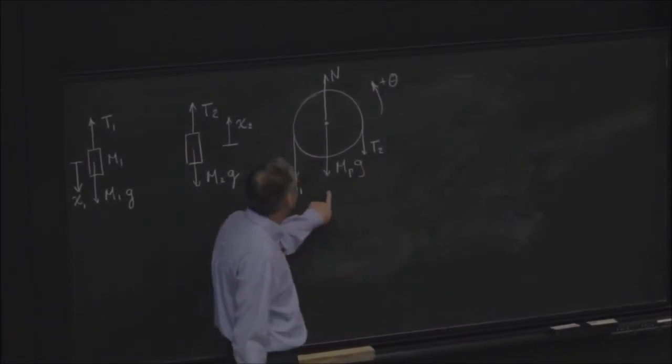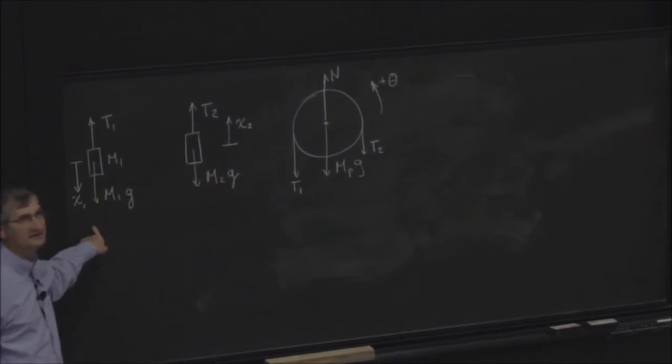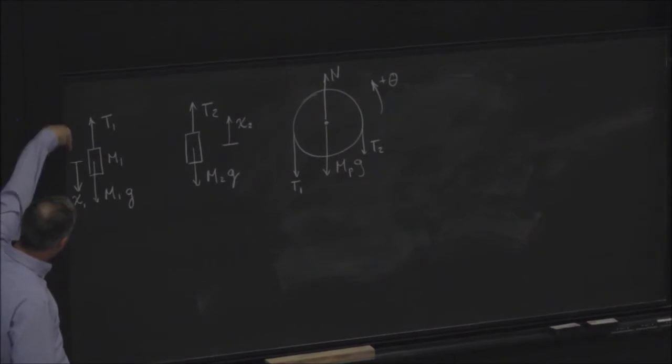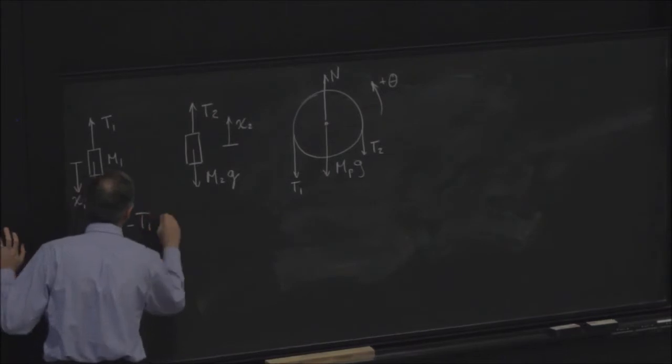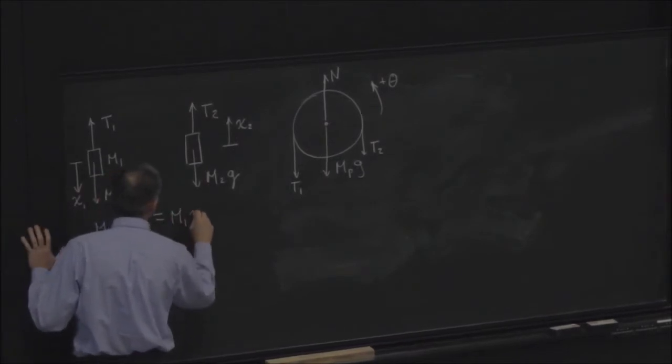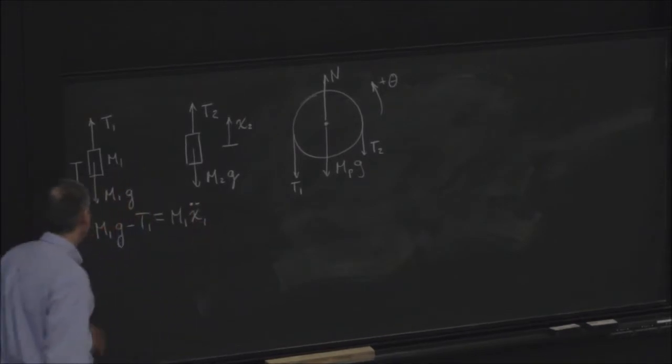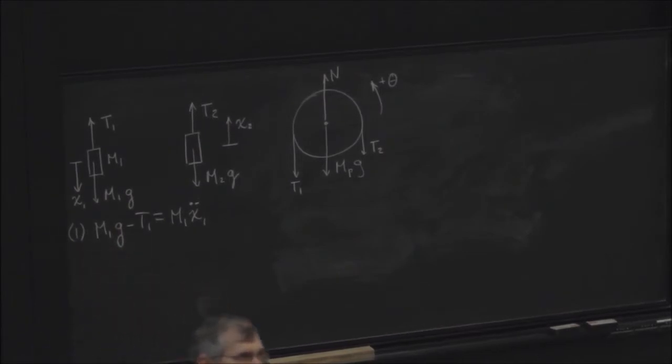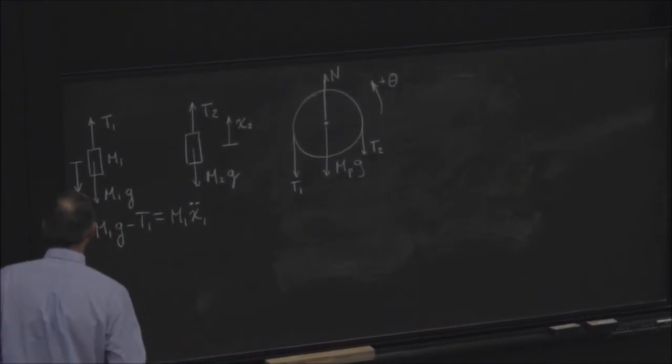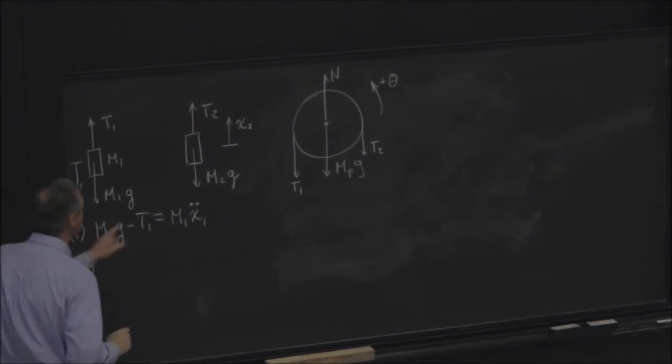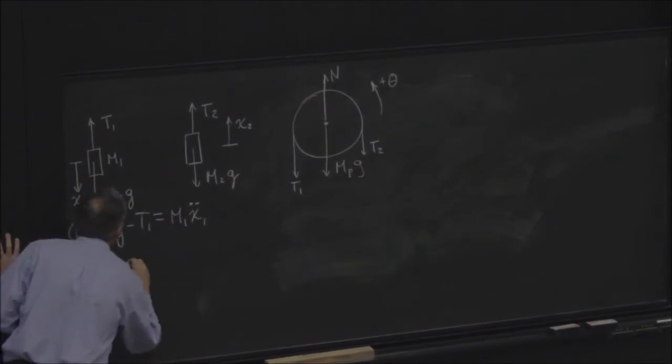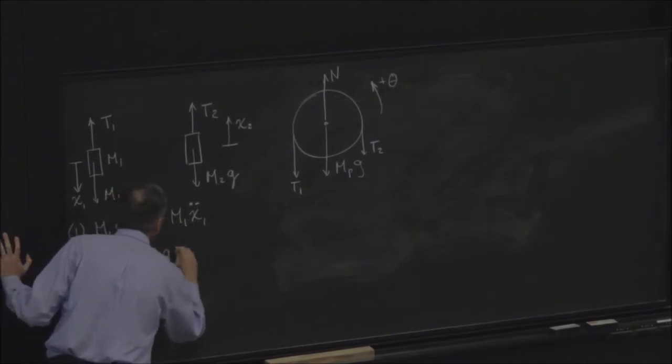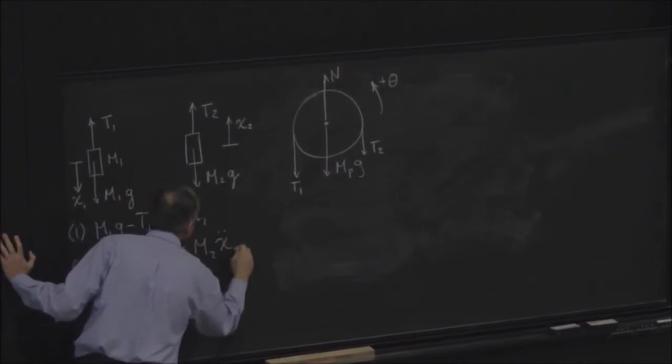So let's start here and get an equation of motion. a is defined positive down. So I have m1g minus T1 is equal to m1 x1 double dot. That's equation one. We're going to have to keep track of equations and unknowns very efficiently.